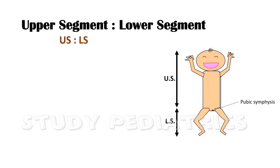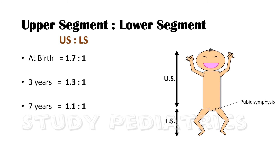Considering head circumference abnormalities: microcephaly if head circumference for age is less than 3 SD, and macrocephaly if more than the 95th centile. Now let's see the upper segment to lower segment ratio. In early childhood the upper segment is larger than the lower segment, but later the lower segment becomes equal or slightly larger. At birth the ratio is 1.7:1; at 3 years 1.3:1; at 7 years 1.1:1; and by 10 years 1:1. Segmentation is measured from head to pubic symphysis, and from pubic symphysis to the heel.